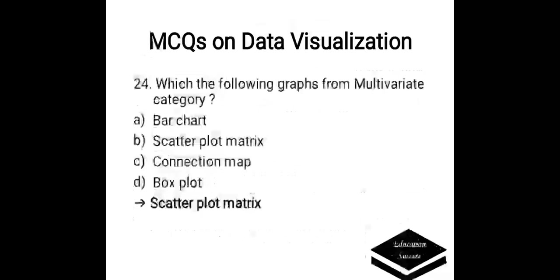Which of the following graphs is from the multivariate category? Options are: A. Bar chart, B. Scatter plot matrix, C. Connection map, D. Box plot. Correct answer is scatter plot matrix.